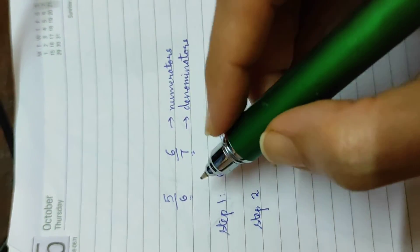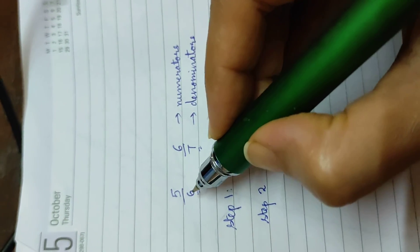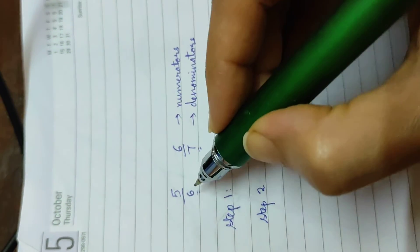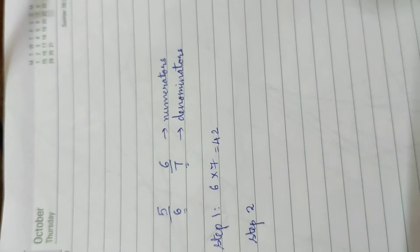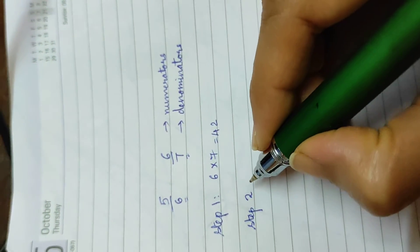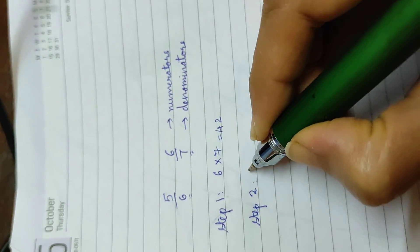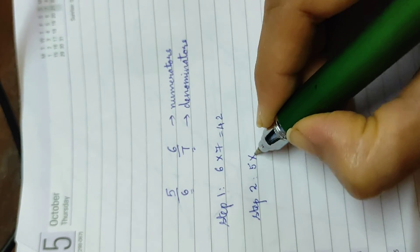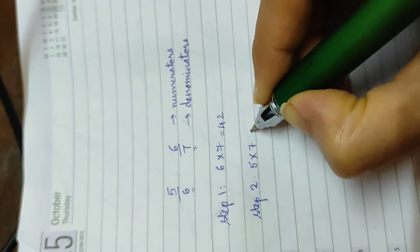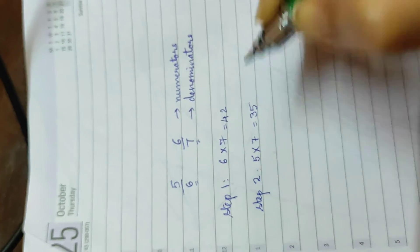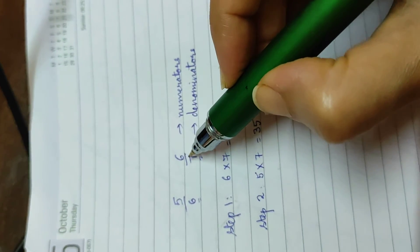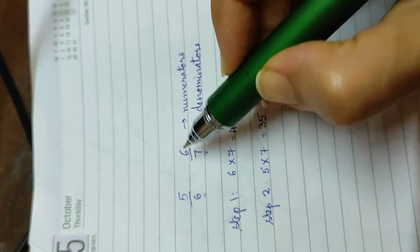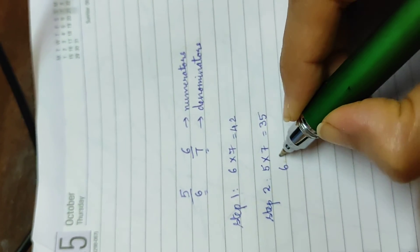So step 2 is 5 times 7 is 35, and we had multiplied 7 with 6, so we will also multiply 6 with 6. That will give you 6 times 6 is 36.